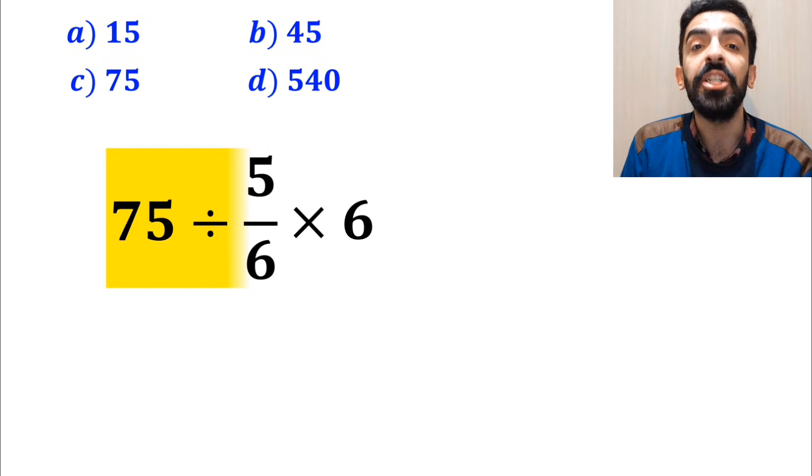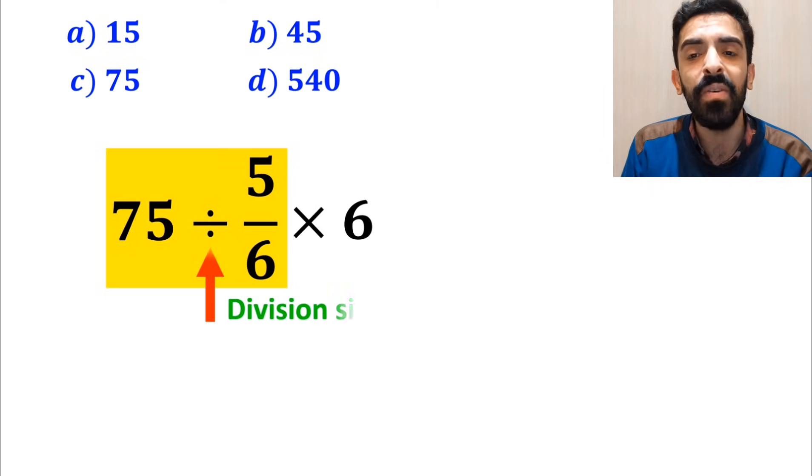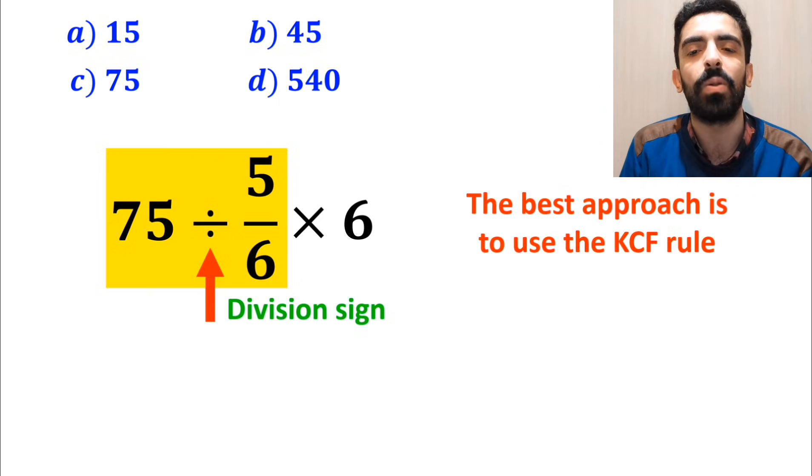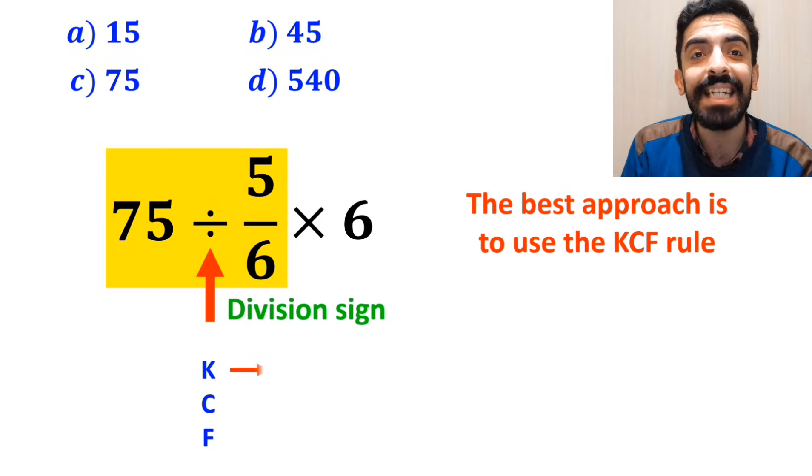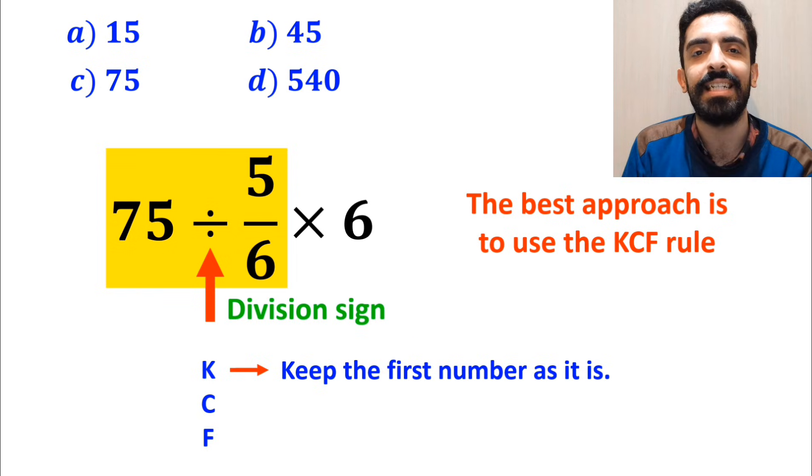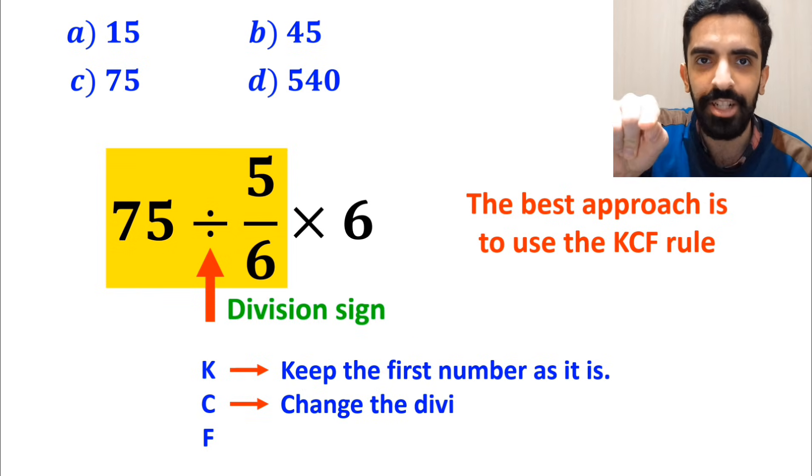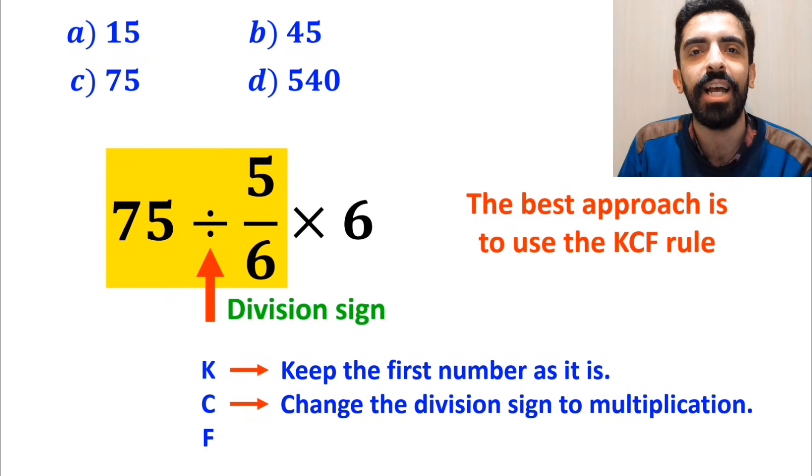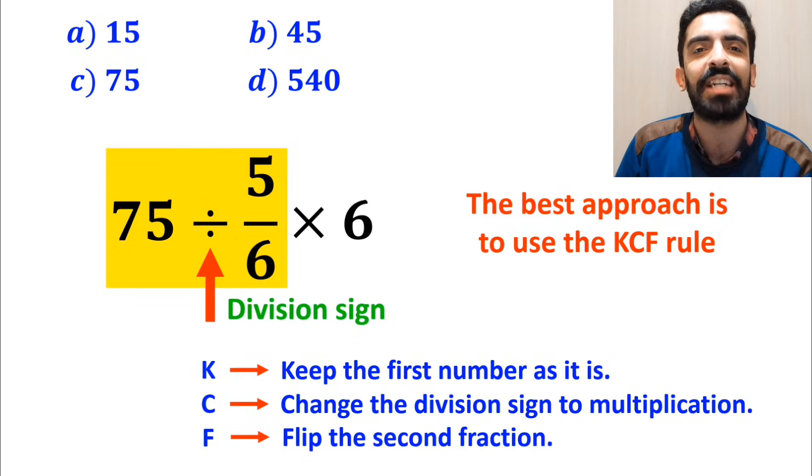So, we'll start with the expression 75 divided by 5 over 6. Whenever we see a division sign between two terms, the best approach is to use the KCF rule. K stands for keep the first number as it is, C stands for change the division sign to multiplication, and F stands for flip the second fraction.